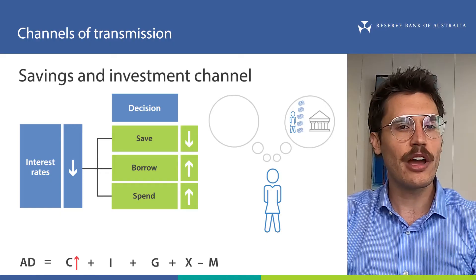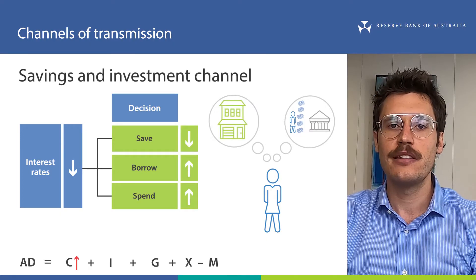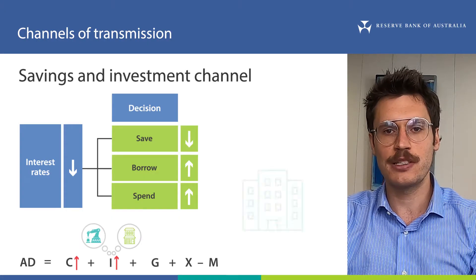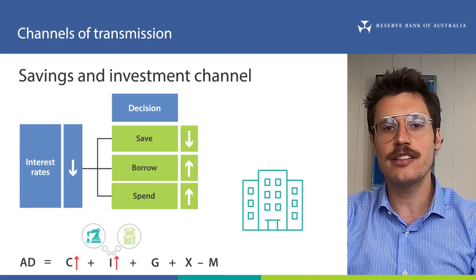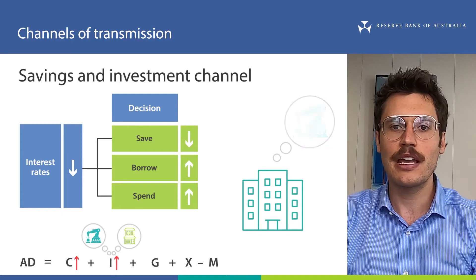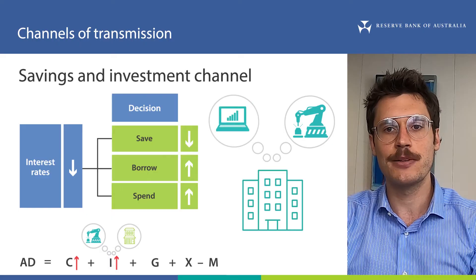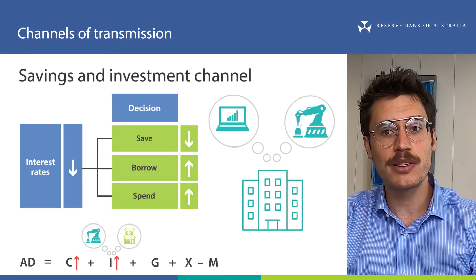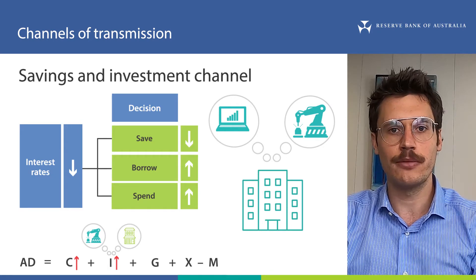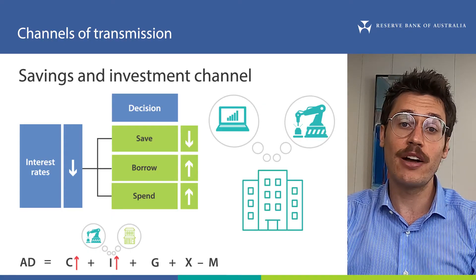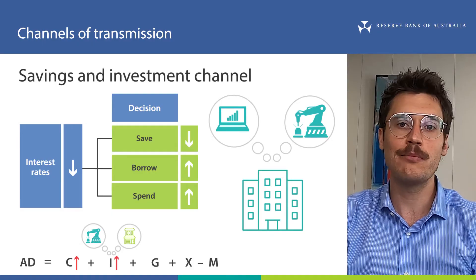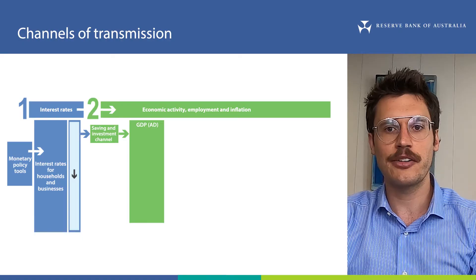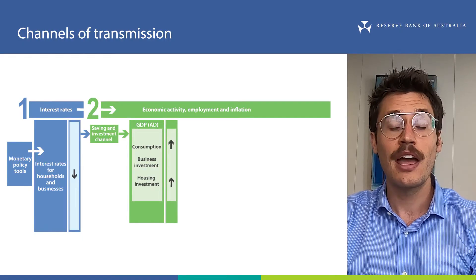If households can borrow more, they are also able to afford to buy more and/or better housing. This can support demand for housing, which increases investment in building new housing. Lower lending rates can also increase investment spending by businesses. Investment is spending that increases Australia's capacity to produce goods and services — say capital goods like new equipment, buildings, or even services like research and development. This is because the returns from spending on these goods and services are now more likely to exceed the cost of borrowing. This has a more direct effect on businesses that fund investment by borrowing rather than using owner or shareholder funds. So to summarise, the savings and investment channel can increase aggregate demand by influencing consumption, new housing investment and business investment.